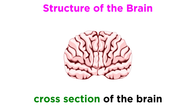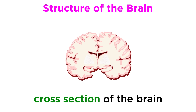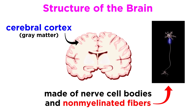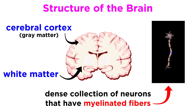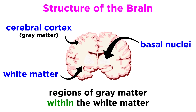We can also describe each hemisphere as exhibiting three regions. There is a cerebral cortex made of gray matter, consisting mainly of nerve cell bodies and non-myelinated fibers; an internal region of white matter, which is a dense collection of myelinated fibers; and basal nuclei, or regions of gray matter within the white matter.